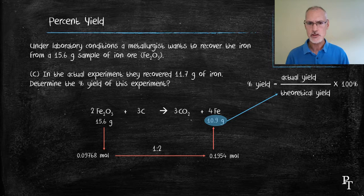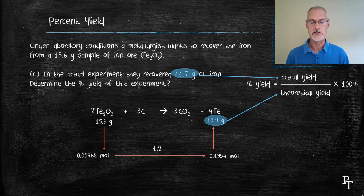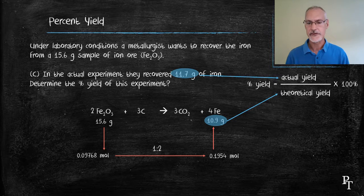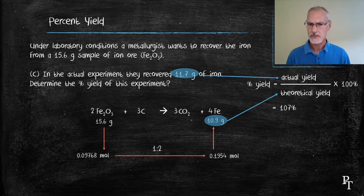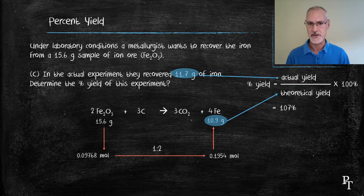Now the theoretical amount is the 10.9 that I obtained in the earlier part. That's the maximum amount I should be able to get based on 15.6 grams of iron oxide. The actual yield in this experiment was 11.7, giving me a percent yield of 107%. Now that's a little bit odd to obtain more than that is theoretically possible. But let's look at some potential sources of error.